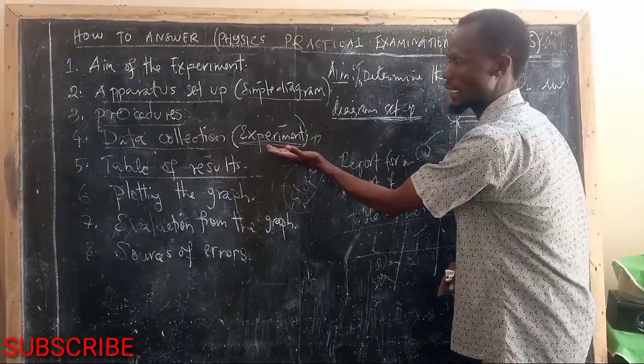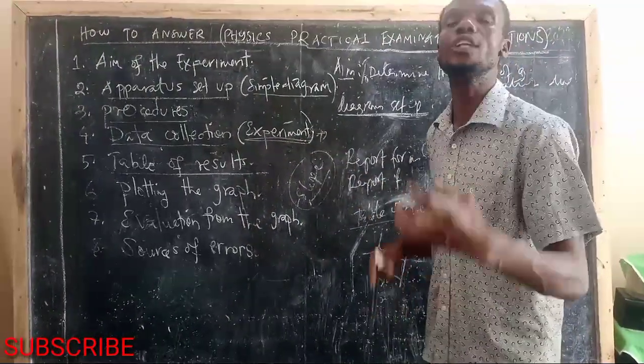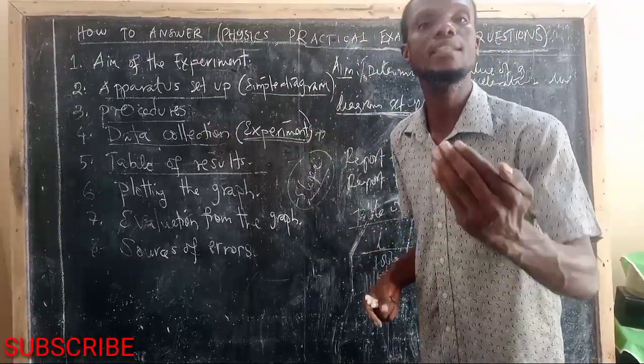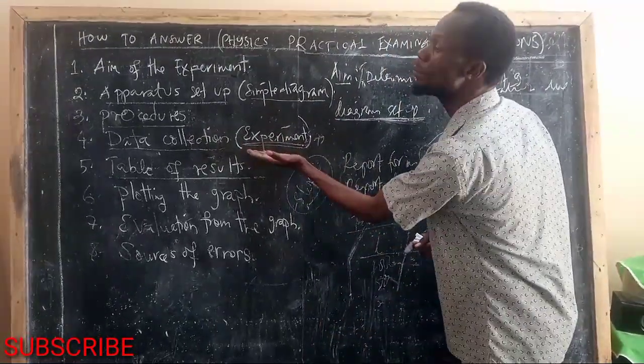It is where the experiment is conducted. So we definitely start conducting experiments. And it is where we obtain the data. And this data may be represented, must be represented or shown to the next step that is called table of results.